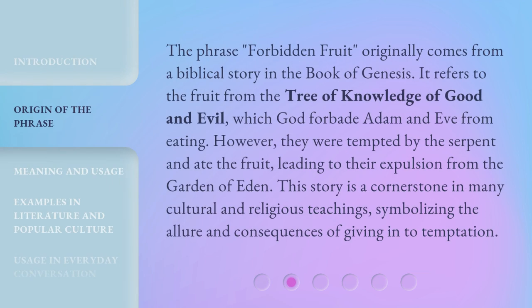The phrase Forbidden Fruit originally comes from a biblical story in the book of Genesis. It refers to the fruit from the tree of knowledge of good and evil, which God forbade Adam and Eve from eating. However, they were tempted by the serpent and ate the fruit, leading to their expulsion from the Garden of Eden. This story is a cornerstone in many cultural and religious teachings, symbolizing the allure and consequences of giving in to temptation.